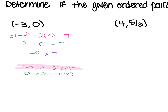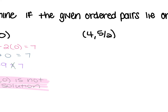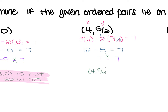These are your notes for 1.1. For the next ordered pair, (4, 5/2), x is 4 and y is 5/2. This gives us 3 times 4 minus 2 times 5/2 = 7. That's 12 minus 5 = 7, since the 2's cancel leaving negative 1 times 5. So 12 - 5 = 7 = 7, which is a true statement, meaning (4, 5/2) is a solution.